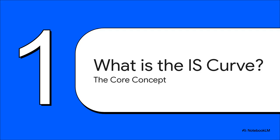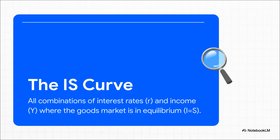First things first — before we can even begin to talk about its slope, we've got to get a handle on what the IS curve actually is. Let's build that foundation. The name itself is actually a huge clue. IS literally stands for investment equals saving. And that right there is the golden rule for the goods market to be in equilibrium — perfectly balanced.